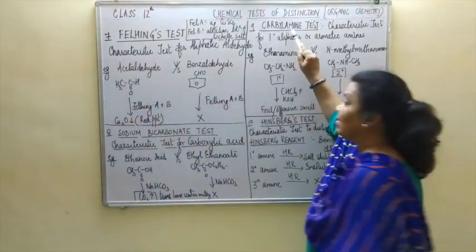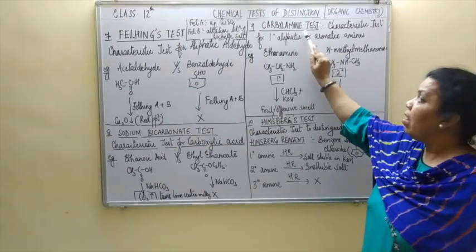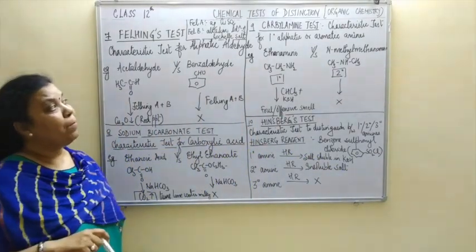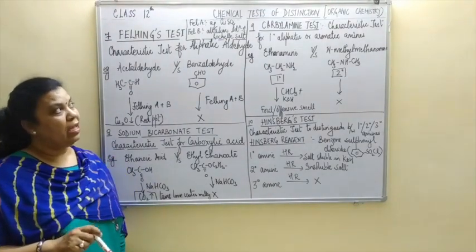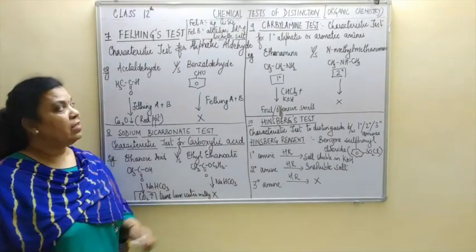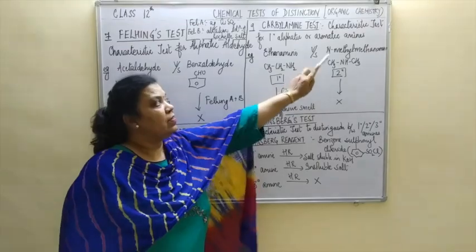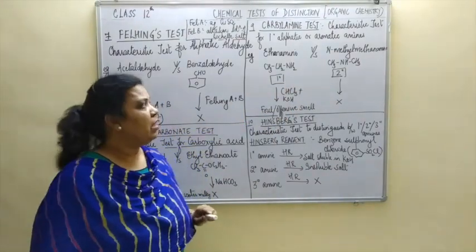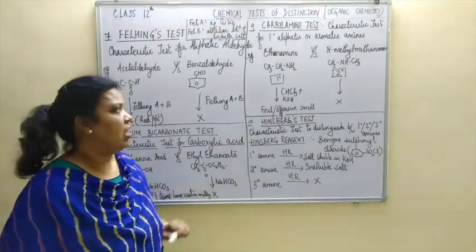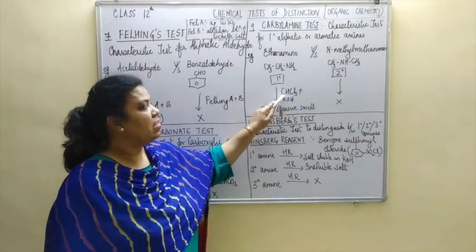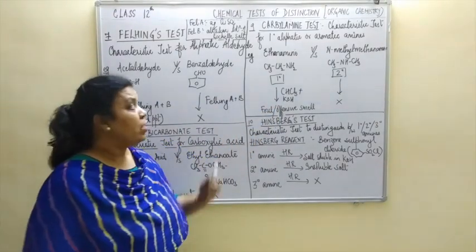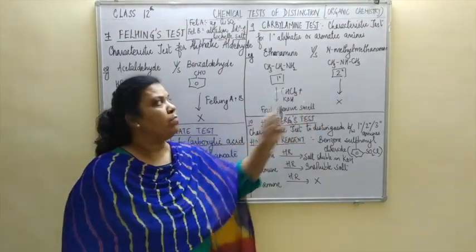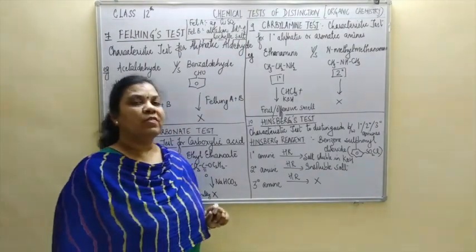Let us move on to the next test of distinction, and that is the carbylamine test, also called the isocyanide test. It is the characteristic test for aliphatic or aromatic primary amines — the amine must be primary to give this test. For example, to distinguish between ethylamine versus N-methylethylamine: ethylamine has structure CH3CH2NH2, and N-methylethylamine is a secondary amine with structure CH3NHCH3. The reagents for the carbylamine test are chloroform and KOH. When you add chloroform and KOH to ethylamine, you get a foul or offensive smell, but no observation in case of N-methylethylamine, which is a secondary amine.